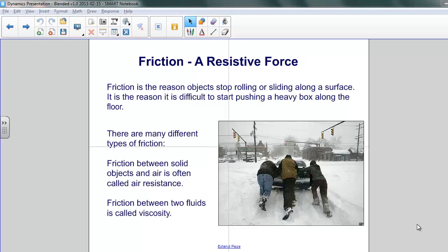There are a number of different resistive forces in nature. Friction is one of the more familiar of these. It's the reason objects stop rolling or sliding along a surface. It's the reason it's difficult to start pushing a heavy box along a floor.